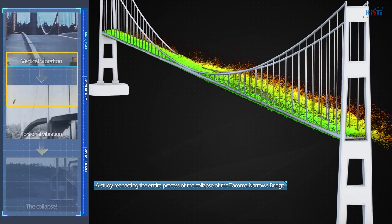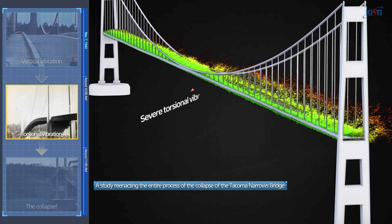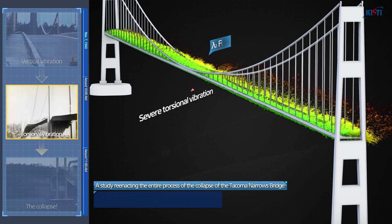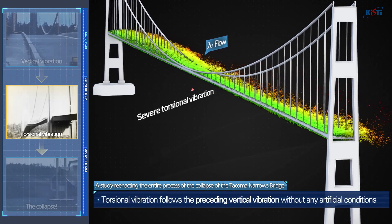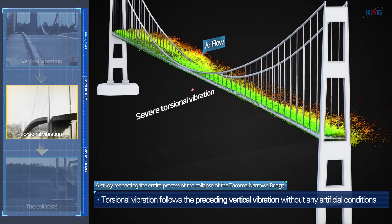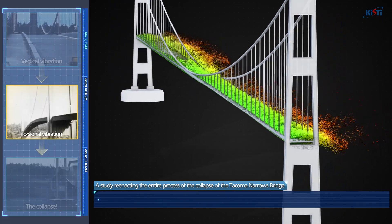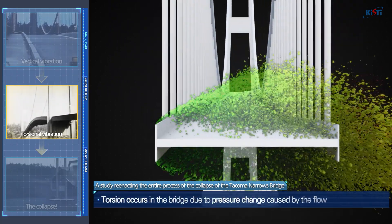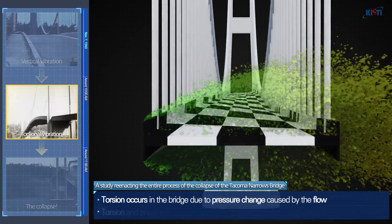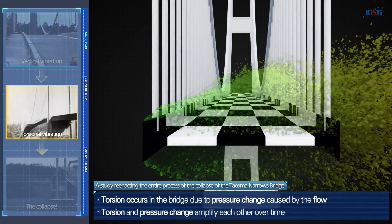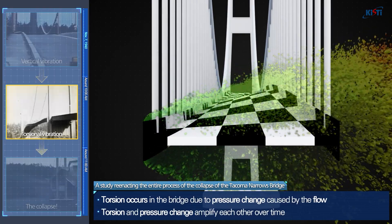Next are the severe torsional vibrations, which acted as the direct cause of the collapse of the bridge. Such torsional vibration follows the preceding vertical vibration without any artificial conditions. We were able to confirm that pressure change caused by the flow led to torsion in the bridge, and that the torsion and pressure change amplify each other over time.